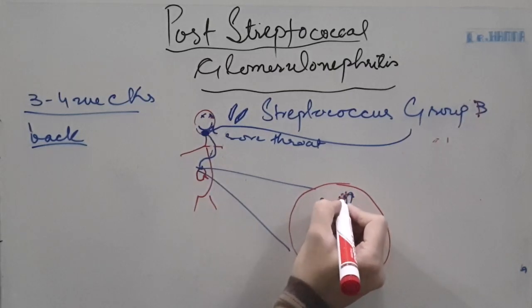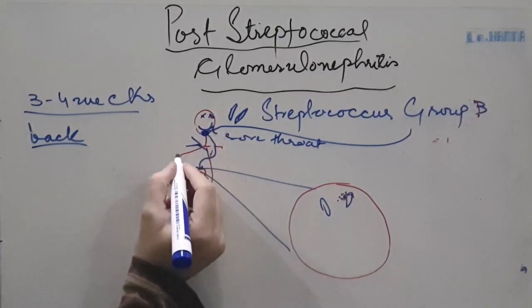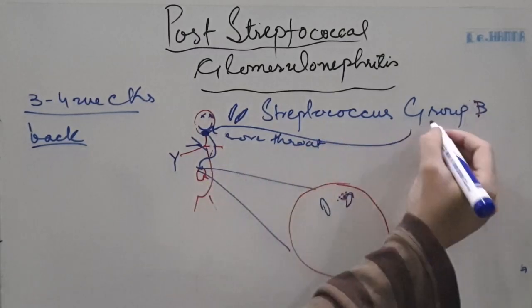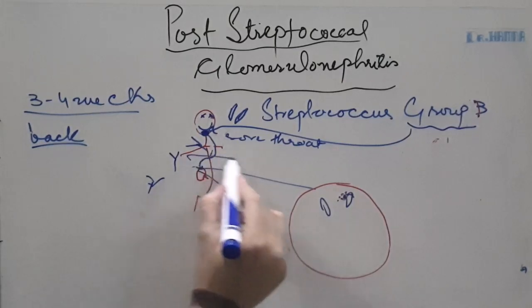When these antigens from the throat reach the kidney, this patient had already developed circulating antibodies against group B streptococci. So when these circulating antibodies come in contact with this antigen, they start binding with this antigen.